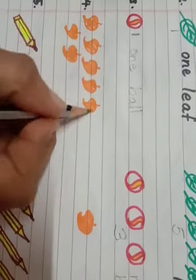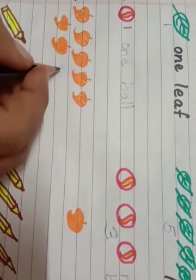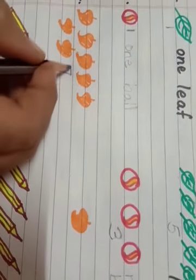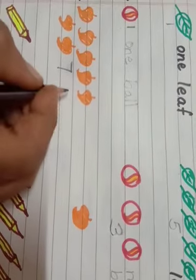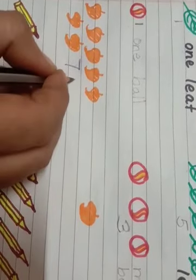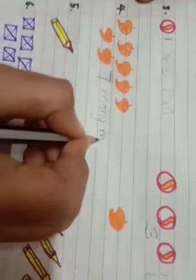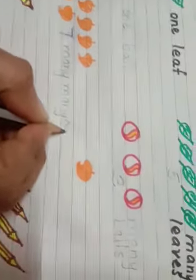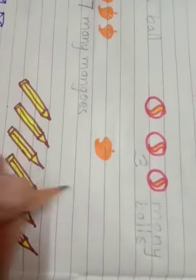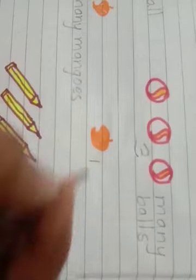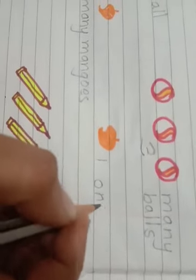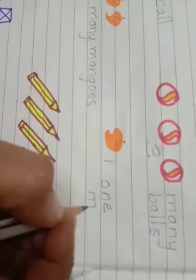One, two, three, four, five, six, seven. How many mangoes? Seven. Seven mangoes. So, what will write? Many mangoes. Here, one mango. Only one. So, we will write here, one mango.